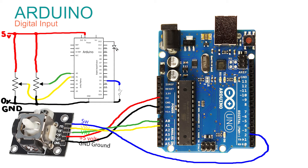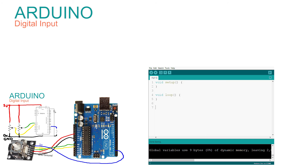Our final schematic now looks like this: the switch connected to pin 2 and the two sliders from the joystick connected to pins A0 and A1. With this done we can return to the software and set up the Arduino. Although we've connected all pins from the joystick, we will only use the digital input for this step — which is why it's called Digital In.